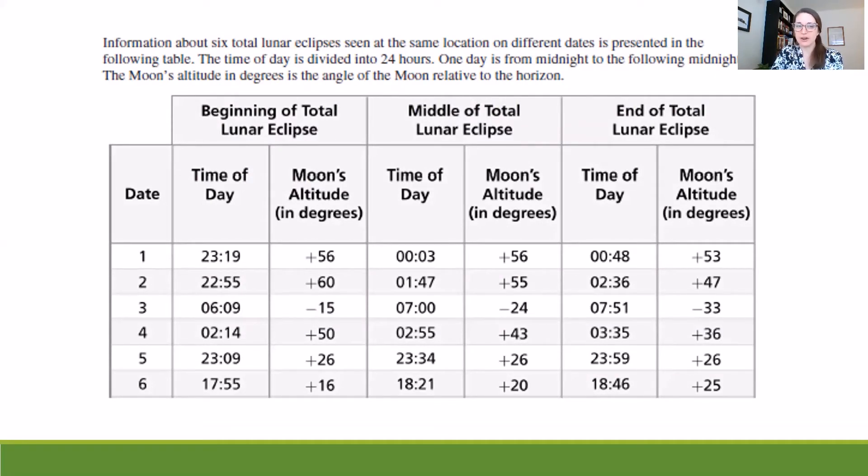Well if I look at the very top there, I see the beginning, middle, and end of a total lunar eclipse. So if I wanted to find the total time, I would need to find out how much time passed between the beginning and the end. So let's look again at date three. It started at the beginning at 6.09 and it ended at 7.51. So I would need to figure out how much time had passed between those two hours. So we have 6.09. Now I know to get from 6.09 to 7.09, that would be one hour. So then I just need to figure out how much time is remaining from 7.09 to 7.51.